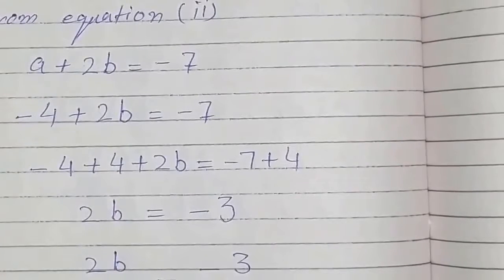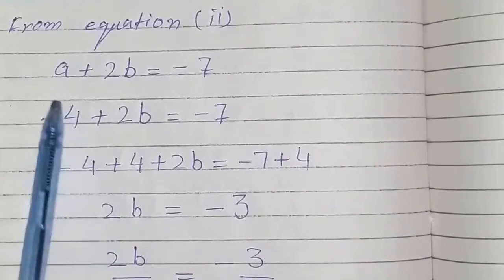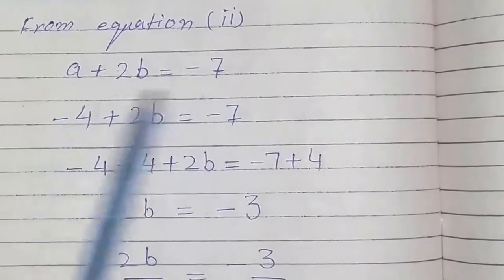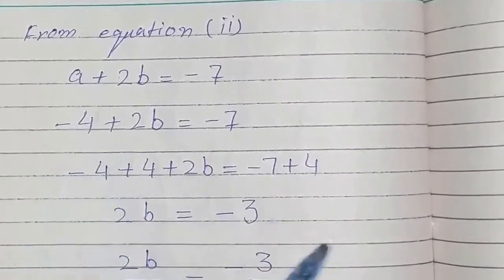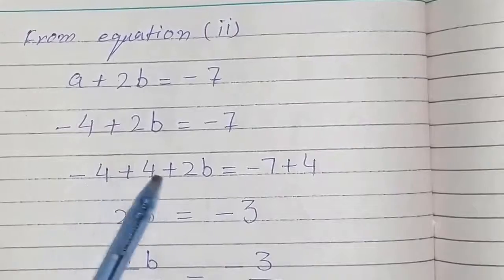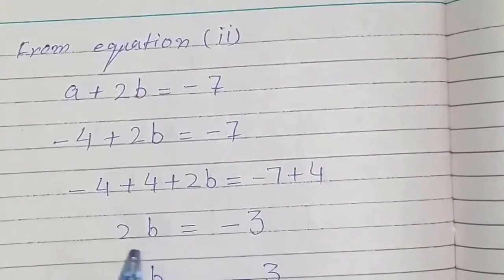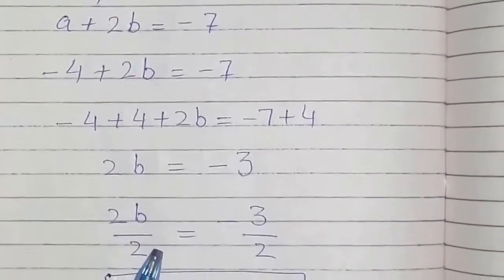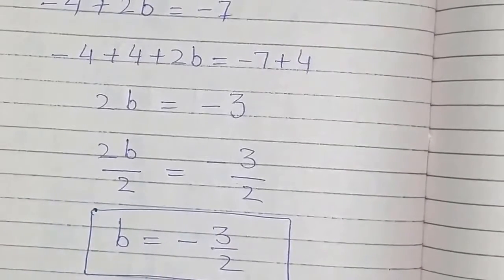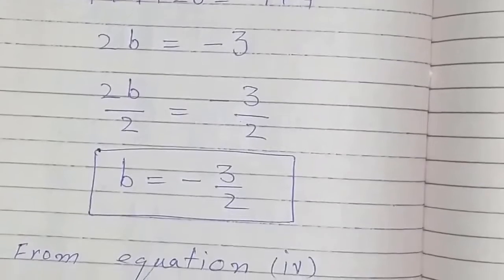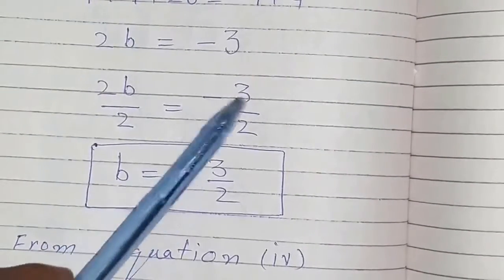From equation 2, A plus 2B equals minus 7. Substituting A equals minus 4, and adding plus 4 on both sides, this 4 and minus 4 cancel out, giving 2B equals minus 3 on the right-hand side. Dividing both sides by 2, this 2 cancels out and B equals minus 3 over 2.